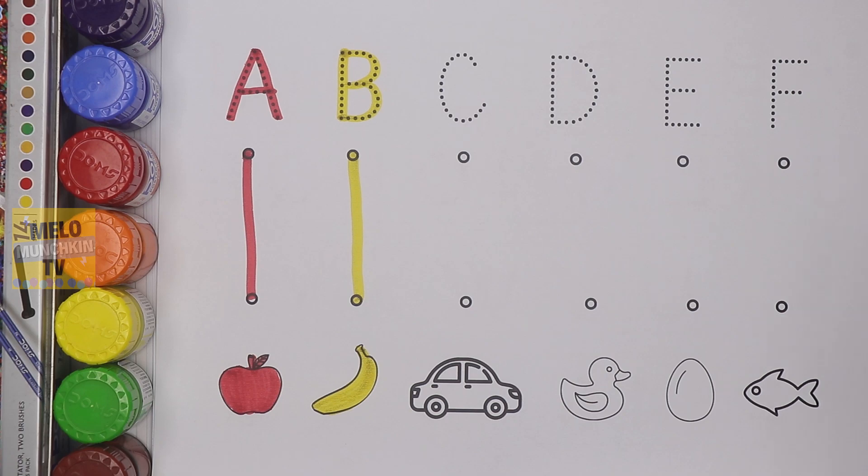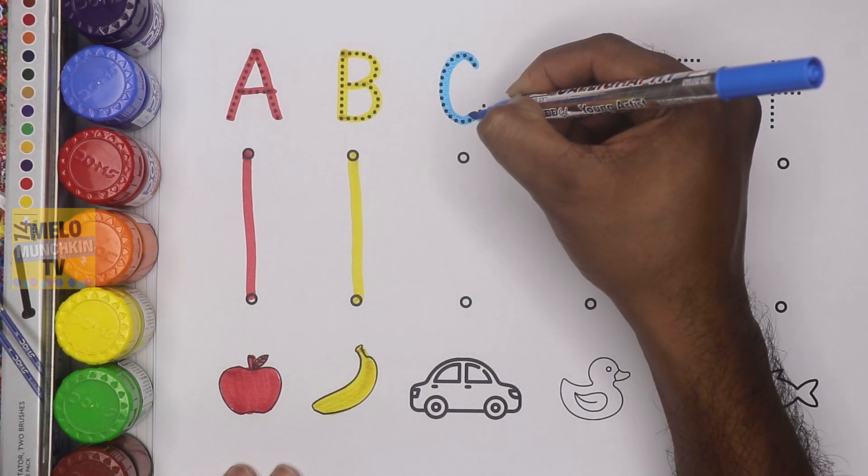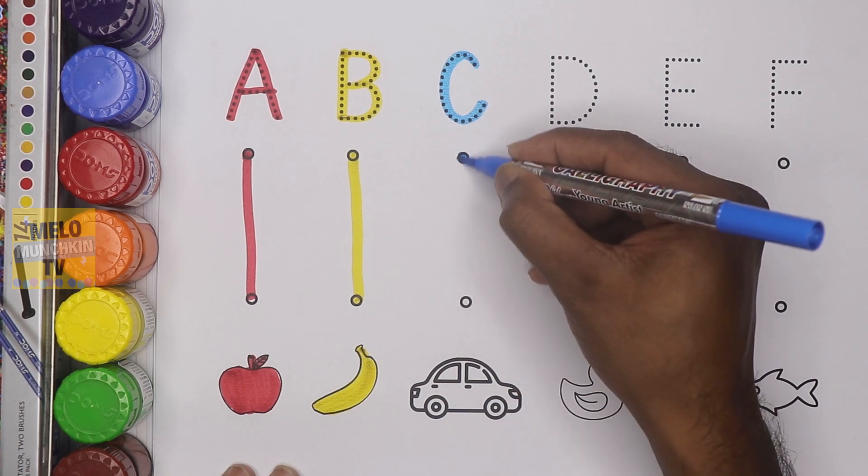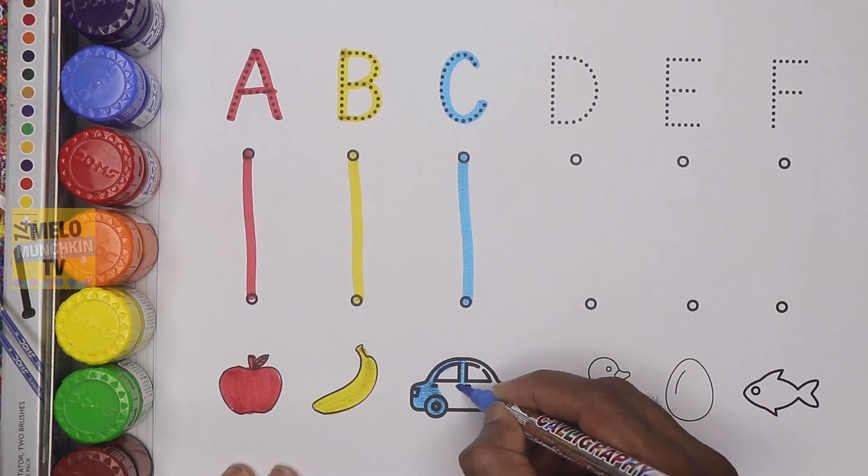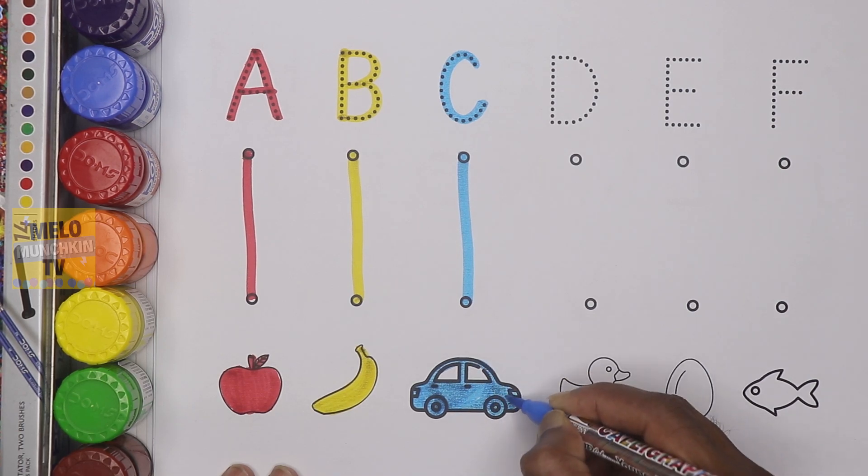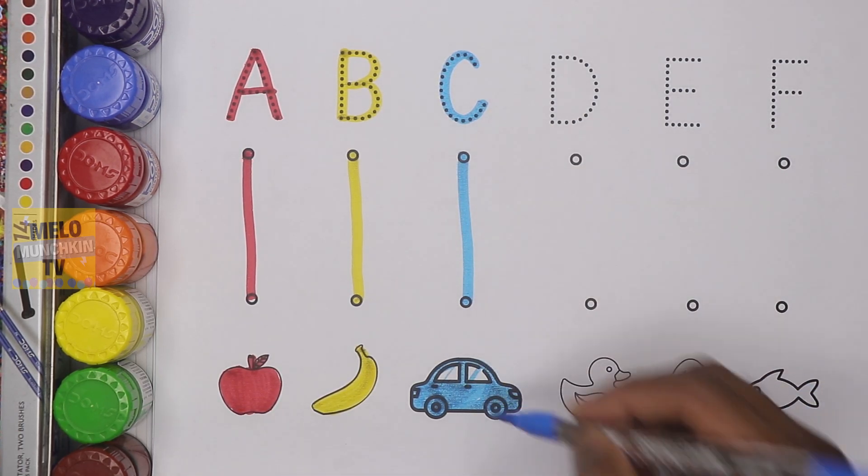Next I'll take blue color and write the letter C. C for car. Let's color the car. C for car.